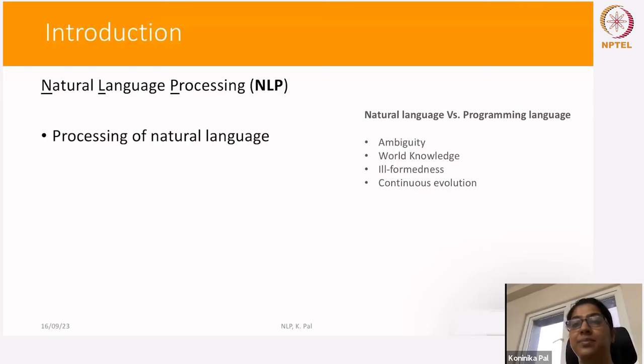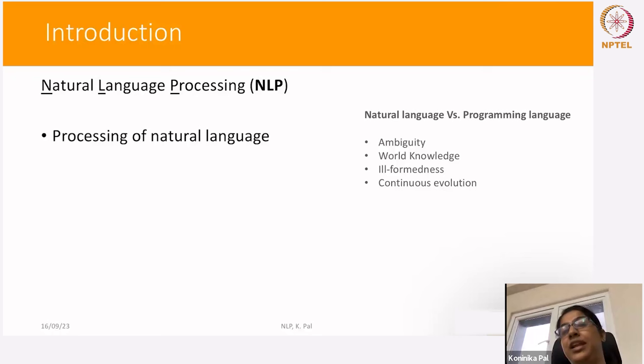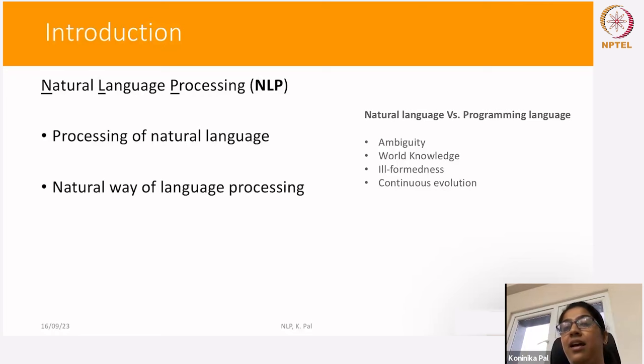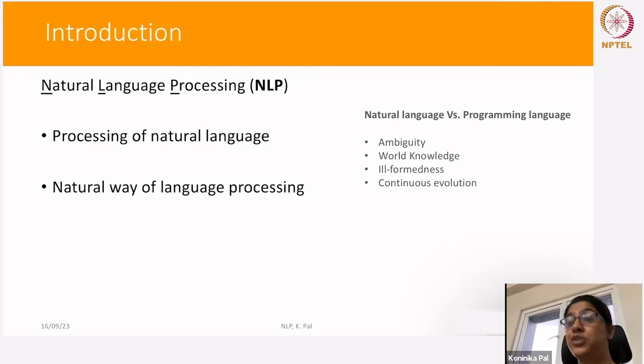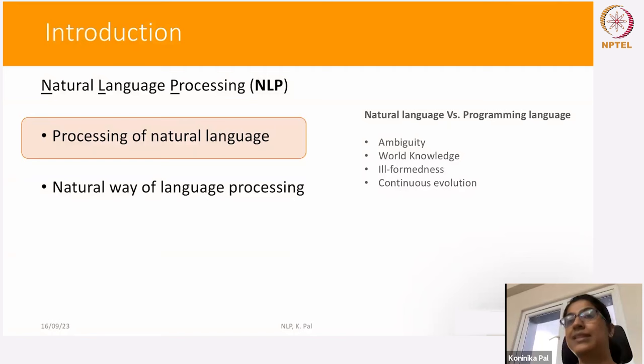Coming back to interpreting the phrase 'natural language processing', another way you can actually interpret it is to consider 'language processing' as one phrase — then the meaning becomes the natural way of language processing, like how human brains actually process language. That is a completely different subject. When we talk about natural language processing, we mainly mean processing of natural language, which helps us use machines to understand language and communicate with us.